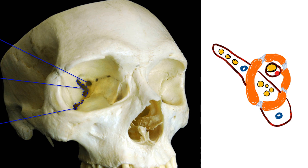Now first let us talk about the superior orbital fissure. In my previous video on the anatomy of orbit, I already described the superior orbital fissure as an elongated opening, which is present between the lateral wall of the orbit and the roof of the orbit. The lateral wall is formed by the zygomatic bone and the greater wing of the sphenoid. The greater wing and lesser wing of the sphenoid harbor what is called the superior orbital fissure.